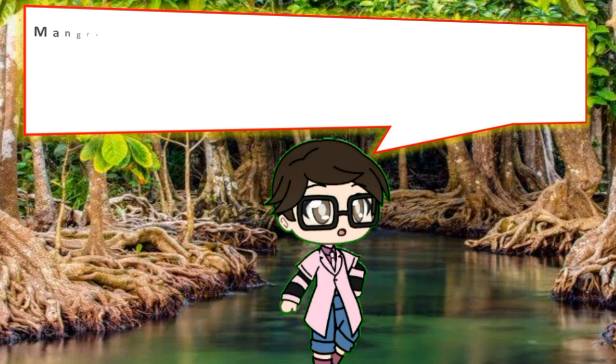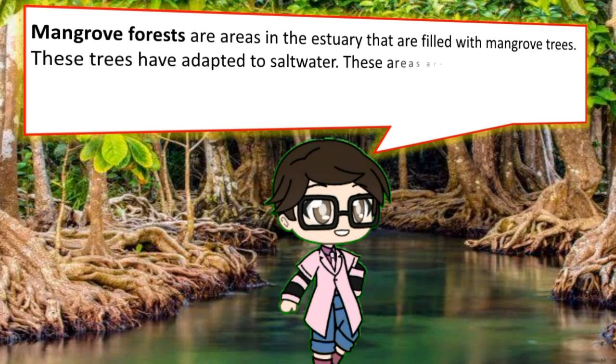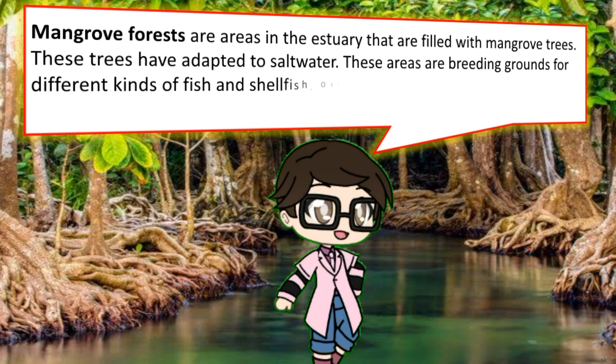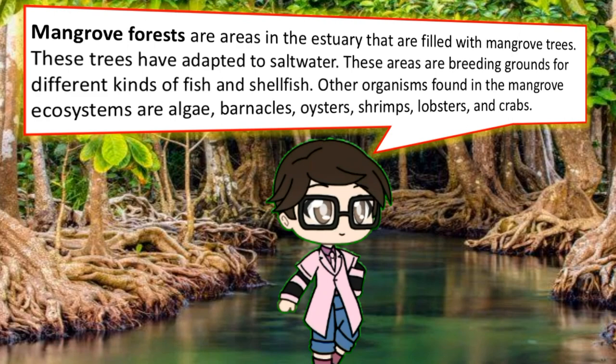Mangrove forests are areas in estuaries that are filled with mangrove trees. These trees have adapted to salt water. These areas are breeding grounds for different kinds of fish and shellfish. Other organisms found in the mangrove ecosystem are algae, barnacles, oysters, shrimp, lobsters, and crabs.